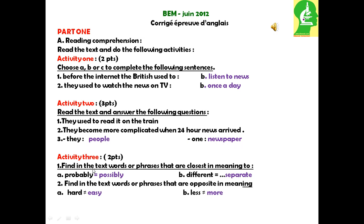Activity 3: Find in the text words or phrases that are closest in meaning. Hard — the opposite of easy. Find in the text words or phrases that are opposite in meaning. Hard is the opposite of easy. Less is the opposite of more.